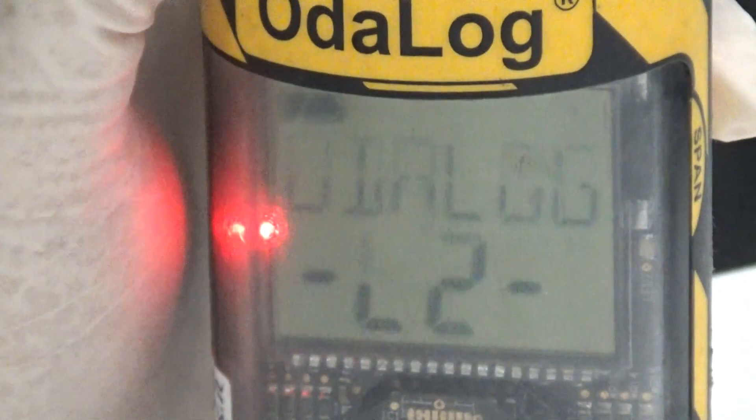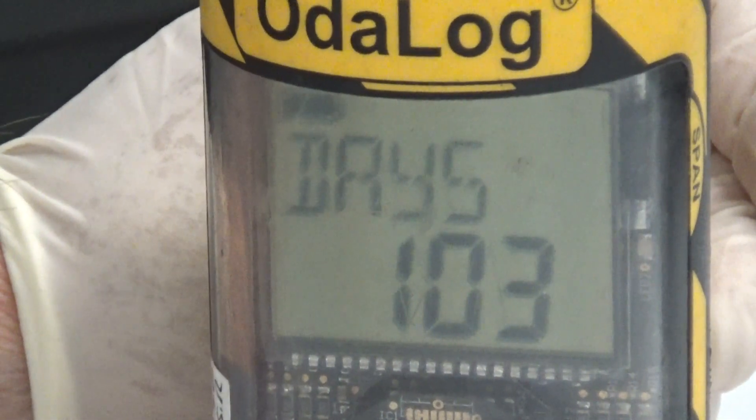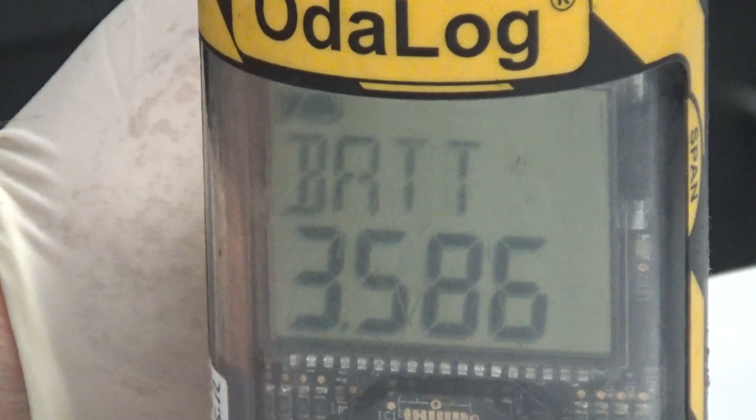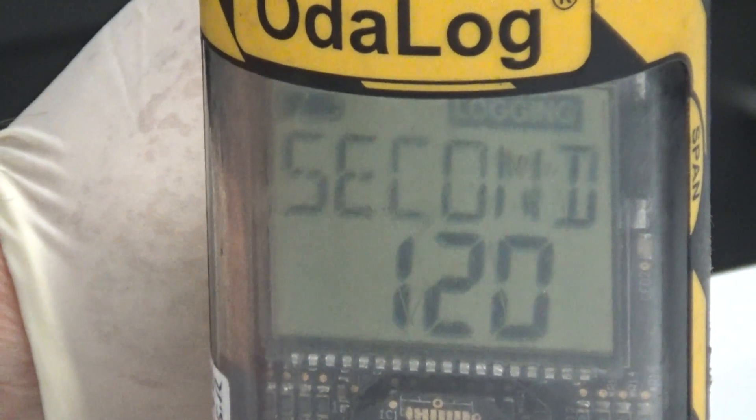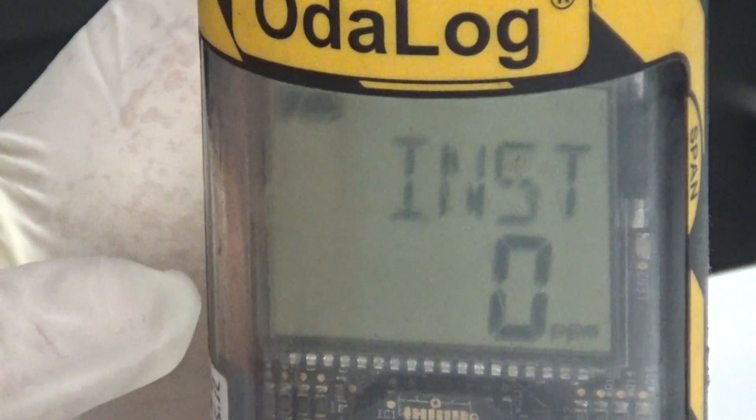You're going to let it cycle through a series of about five or six things that really don't mean very much, but it needs to go through that to reset itself so it knows where it's at. Once it gets through those different screens, it'll say INST0.